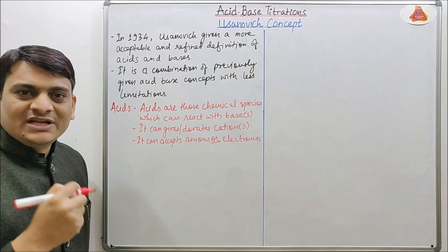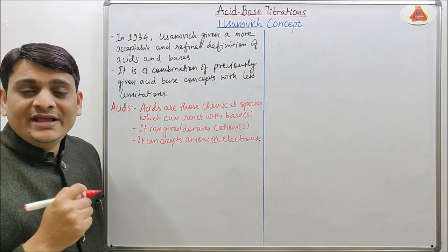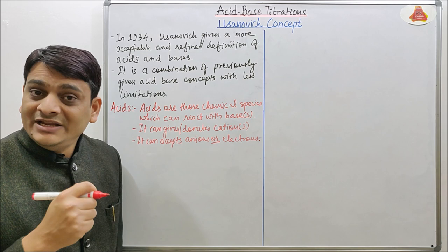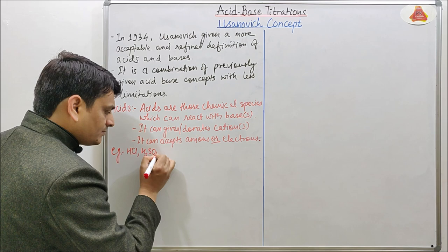According to Usainovich theory, acids are those species which can follow any of these statements. Examples of acids are HCl, H₂SO₄, H⁺, Ag⁺, Al³⁺, Fe³⁺, Ce⁴⁺, etc.